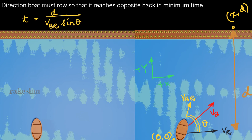The time taken by the boat to cross the river is d divided by vbr·sinθ. For this to be minimum, the numerator d — the width of the river — is constant and cannot be changed. The value vbr is also constant. We can only change θ. Since sinθ is in the denominator, if sinθ is maximum, the time will be minimum.